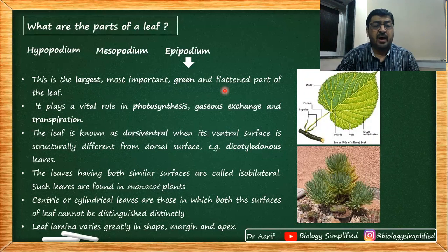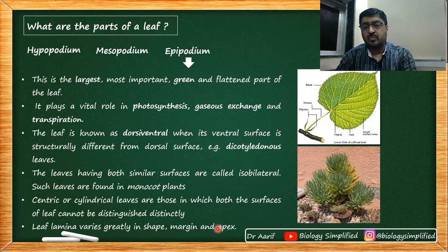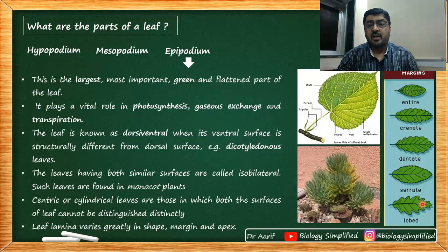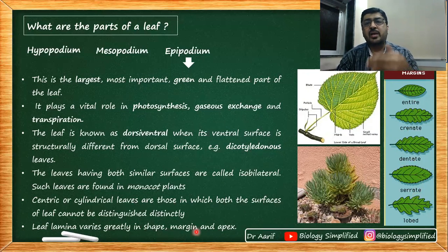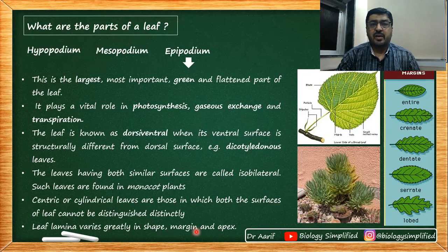If both surfaces of the lamina are similar in structure, the leaf is called isobilateral — 'iso' meaning same, 'bilateral' meaning both sides — which is a feature of monocot plants. Centric or cylindrical leaves also exist, where you cannot distinguish dorsal from ventral. The leaf lamina varies greatly in shape, margin, and apex.